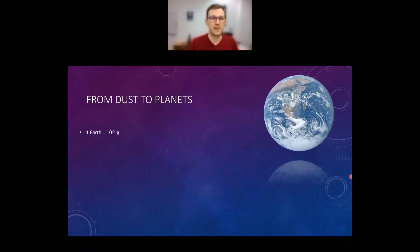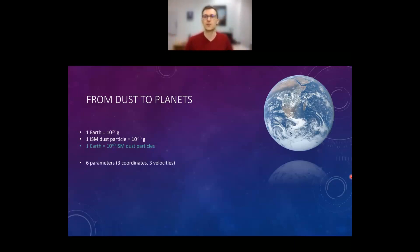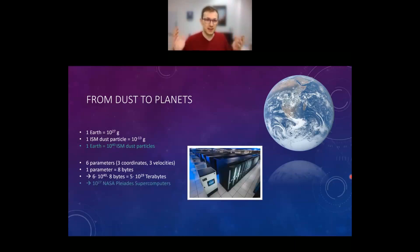I always like to do this little numerical example here. If you think only of Earth, Earth has 10 to the 27 grams. Now, if we want to produce Earth out of interstellar medium dust particles, which have 10 to the minus 13 grams, that means only to produce one Earth, we need 10 to the 40 ISM particles. Okay, we put this in the simulation and we store six parameters for each particle, which is three coordinates, three velocities, and we store them as a double precision floating number, which means per parameter we have eight bytes. That means we need in the RAM, just for one Earth, 10 to the 30 terabytes. And then we only have one Earth. We don't have the other planets. We don't have the mass that got accreted or ejected. And to put this in another perspective, this is like 10 to the 27 NASA supercomputers. So it's just not possible.